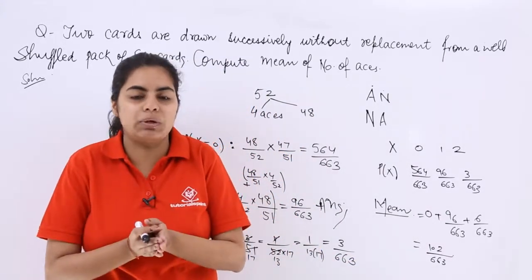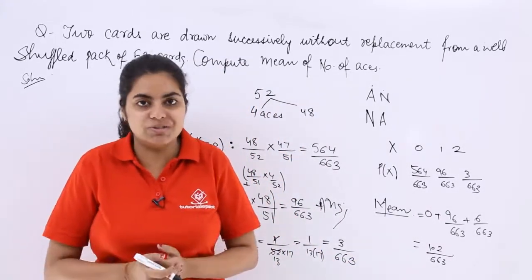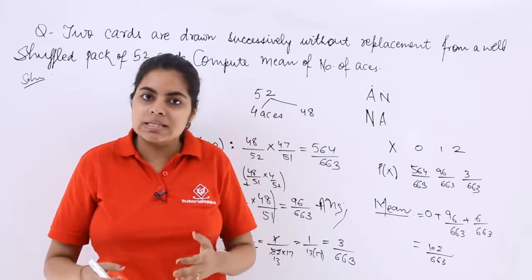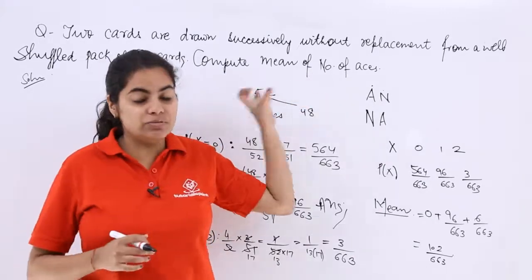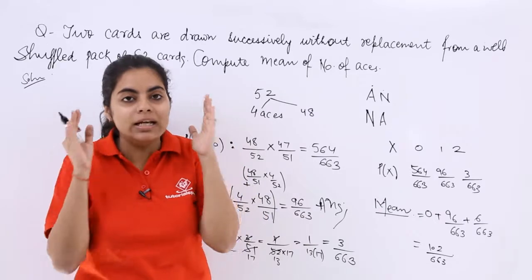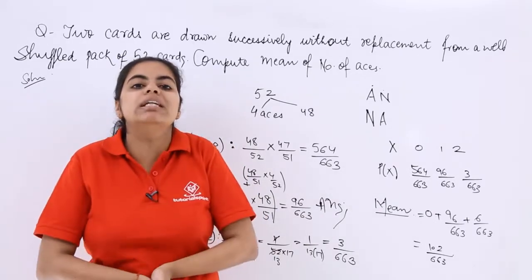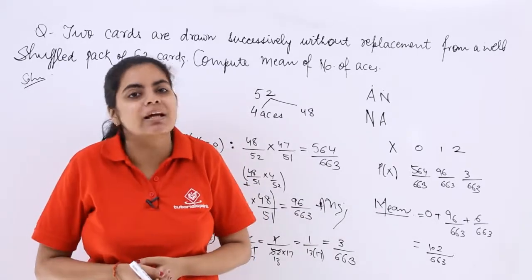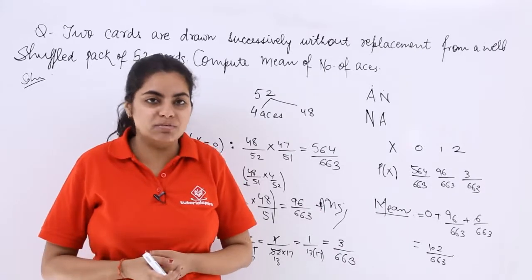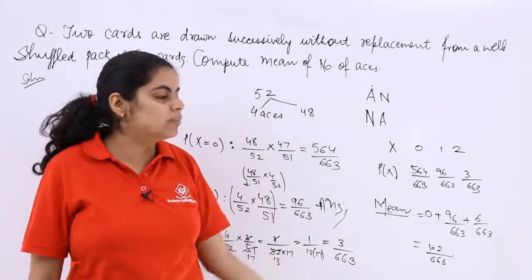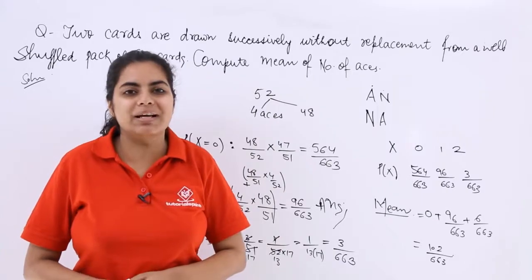First important thing is know what the question says. Since this is from miscellaneous category, this should fall into the mean and variance of a discrete random variable category and then you can use the formulas. I have not written the formulas but in your examination please do write the formulas.